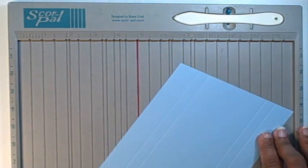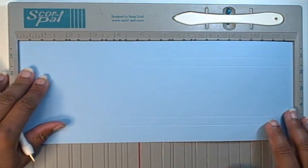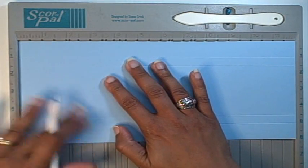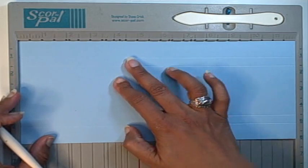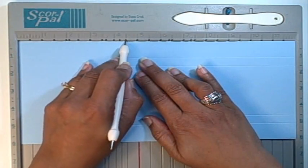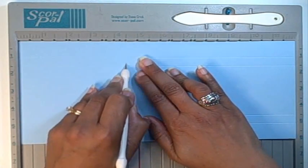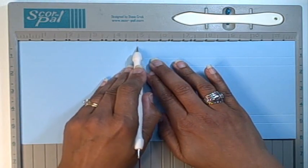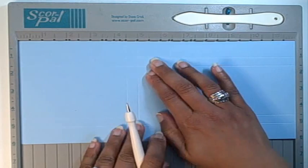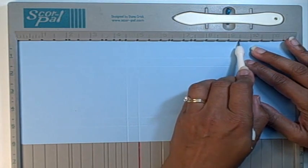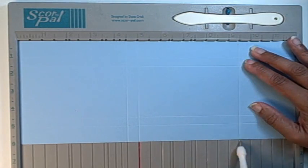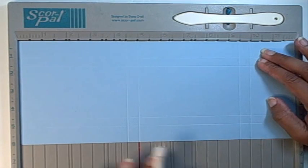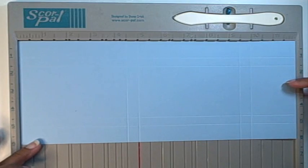All right, and then we're going to turn our paper. It's okay if it's more than 12 inches, it's not a big deal. The next score that we're going to make is at four and a half inches from the left hand side. The next score will be at five inches. Following that, the next score will be at nine and a half inches, and the last score will be at ten. I'm going to call this the flap side because this is where our flap is going to be.